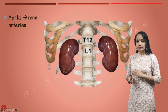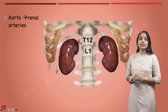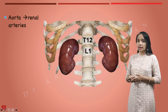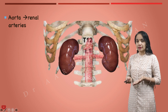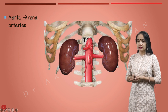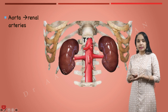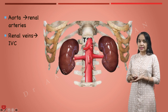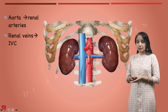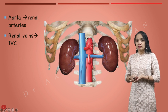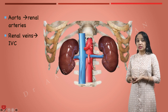Let's talk about the blood supply. The main vessel supplying the kidney is the abdominal aorta, and the branches which supply the kidney are called the renal arteries. All the blood coming out from the kidneys exits through the renal veins, which eventually drain into the inferior vena cava.